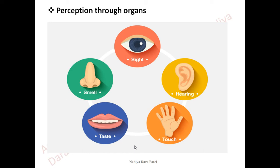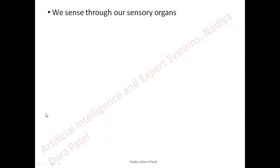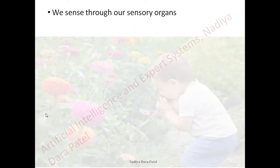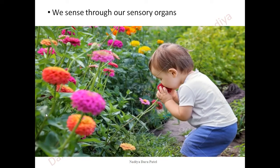Remember, while studying agents and environment, these sensory organs are going to help you a lot — we sense through them. Take a look at this picture where a little boy is actually trying to have his first experience with flowers. He is trying to touch them, smell them, feel them, and see what exactly the flowers are all about. While learning in his growth years, he is quite young and with the course of time he will save this data.